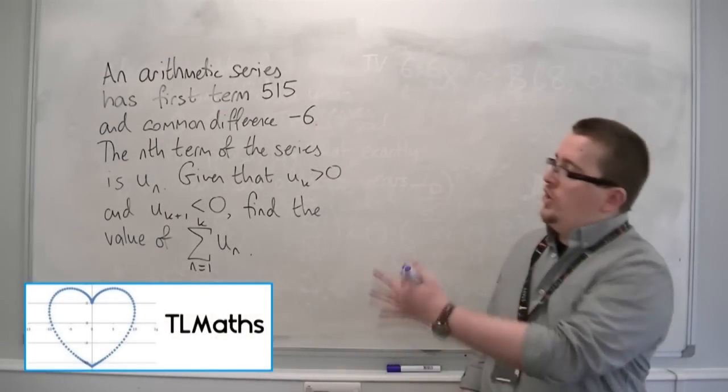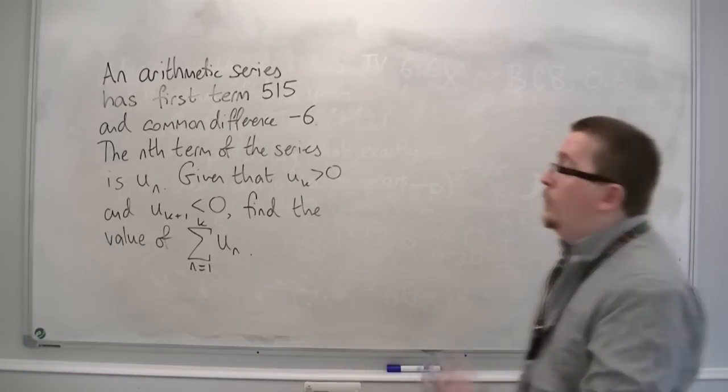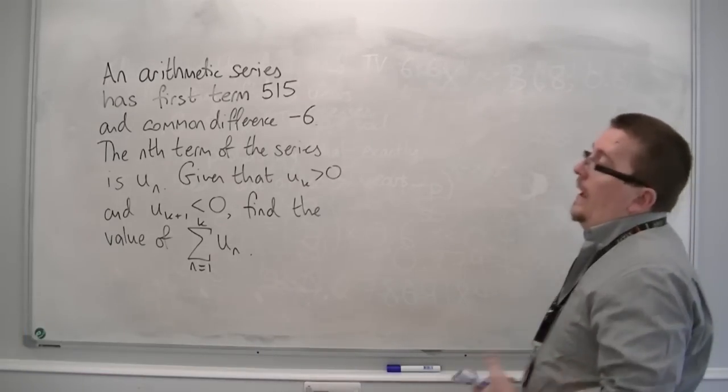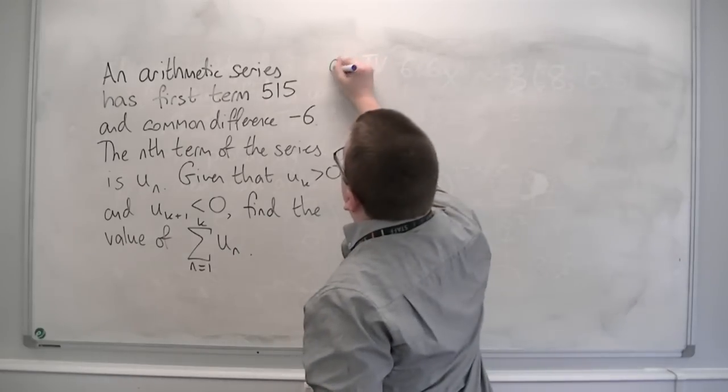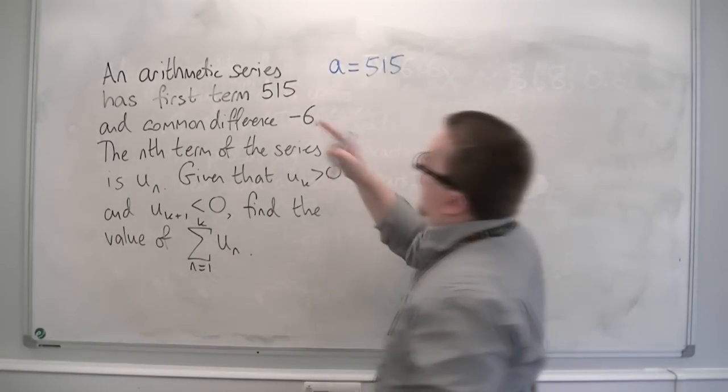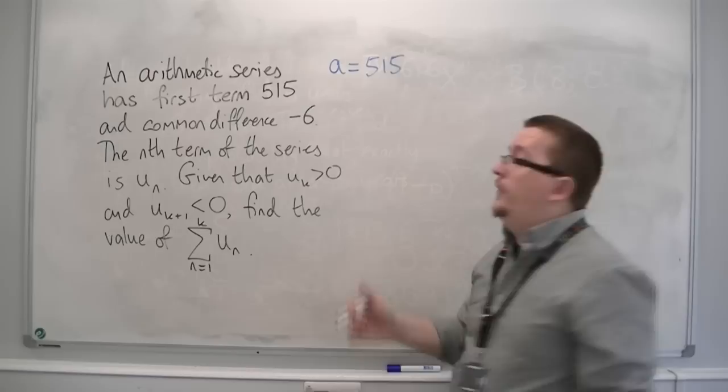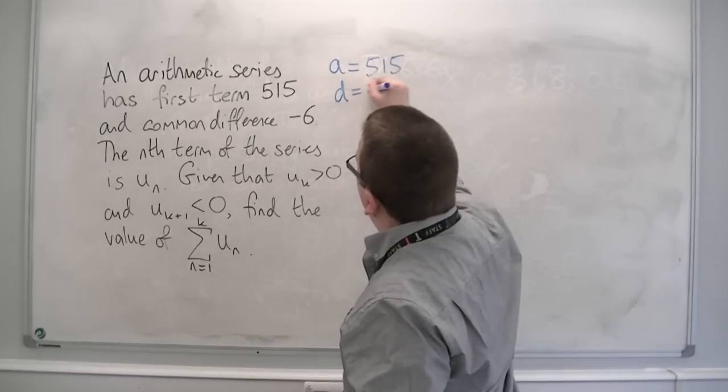I've been asked to look at a question similar to this one. We have an arithmetic series, and we know that its first term is 515, so a is 515, and has a common difference of -6, so d equals -6.